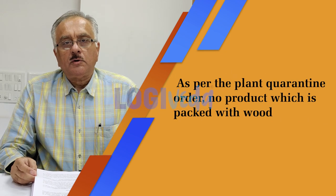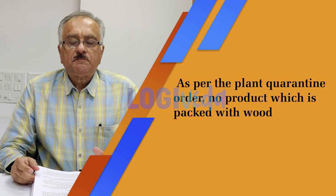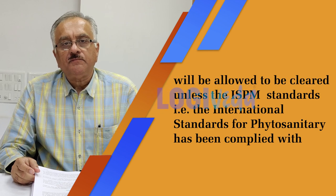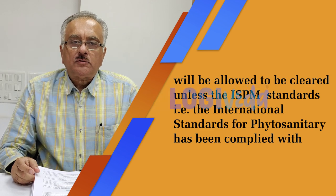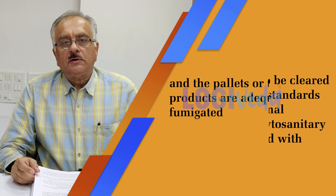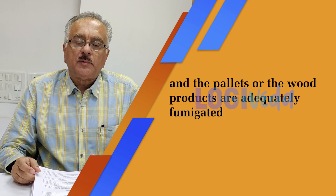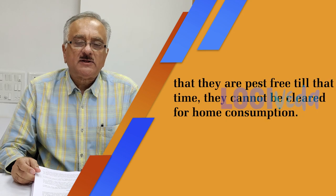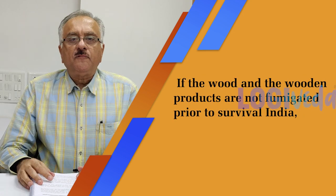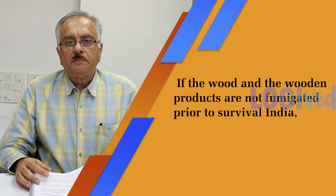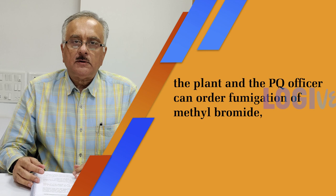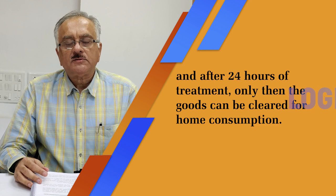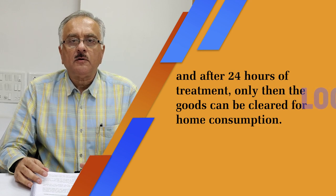Also, as per the Plant Quarantine Order, no product which is packed with wood will be allowed to be cleared unless the ISPM standards — that is the International Standards for Phytosanitary Measures — have been complied with, and the pallets or wood products are adequately fumigated or covered with a heat treatment certificate from the particular country certifying they are pest free. If the wood and wooden products are not fumigated prior to their arrival in India, the PQ officer can order fumigation with methyl bromide, and after 24 hours of treatment, only then can the goods be cleared for home consumption.